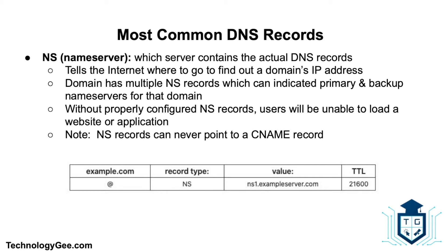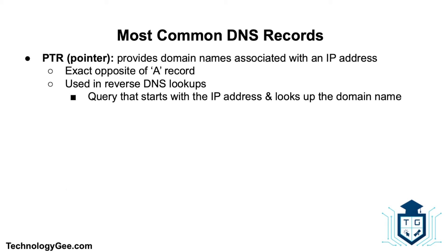The NS record, or name server record, indicates which DNS server is authoritative for a domain — essentially which server contains the actual DNS records. NS records tell the internet where to go to find a domain's IP address. A domain often has multiple NS records indicating primary and backup name servers. Without properly configured NS records, users will be unable to load a website or application. Note that NS records can never point to a CNAME record.